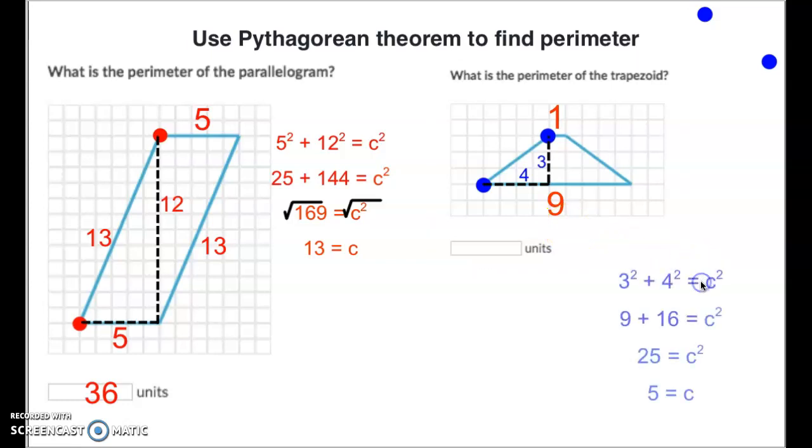We've got 3 squared plus 4 squared or 9 plus 16 is 25. And as we take the square root of both sides, we get c to equal 5. That means this side equals 5. That means this side also equals 5.